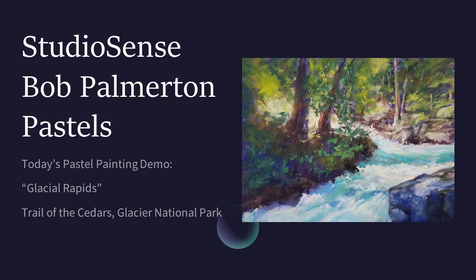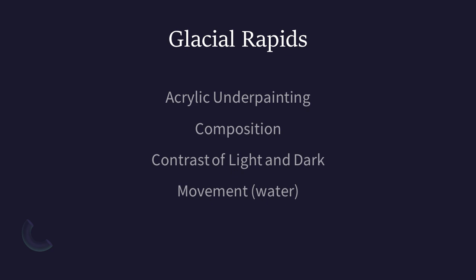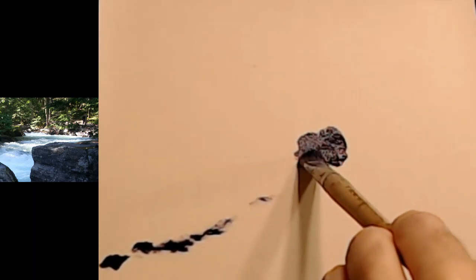Welcome to Studio Sense. This is Bob Palmerton. Today we are heading off to Glacier National Park in Montana. We'll be on the Trail of the Cedars on the Going-to-the-Sun Road — a wonderful hike — and we will be painting what we call glacial rapids. We're going to do a deep blue acrylic underpainting, work on some composition elements, and contrast of light and dark, which is really cool in this particular scene, and we want to convey movement in these rapids.